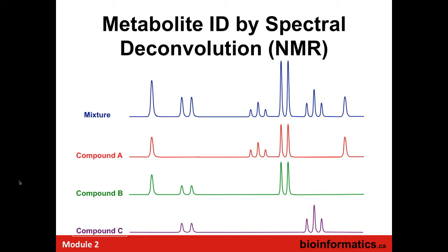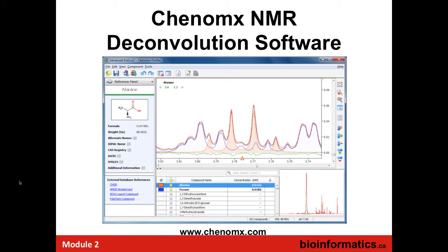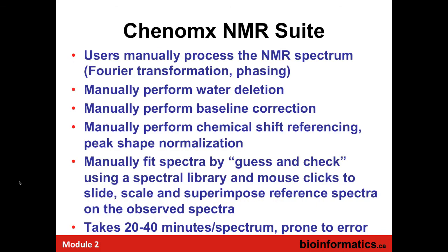There are tools where people have collected single spectral references, compiled them, and created interactive software. One is a software company called Chenomx, which is widely used. You can get your spectrum of a mixture — from urine, blood, or something like that — and it will allow you to interactively fit individual pure reference spectra to your mixture, producing a list of compounds and their concentrations. The method is fairly manually intensive, but it's used by hundreds of people around the world and has been used for more than a decade.